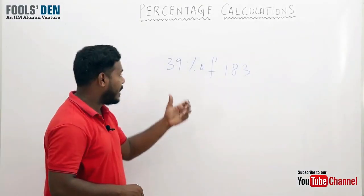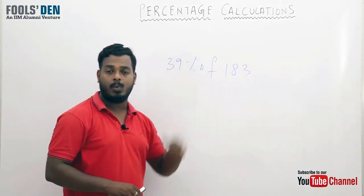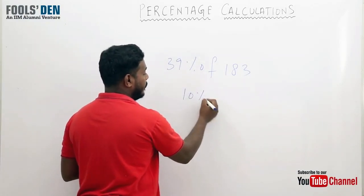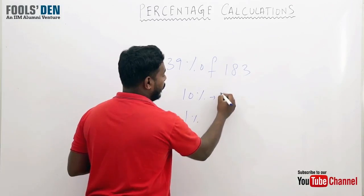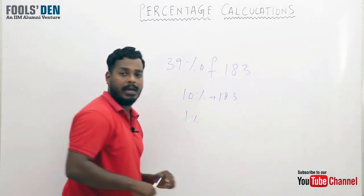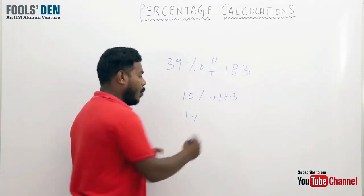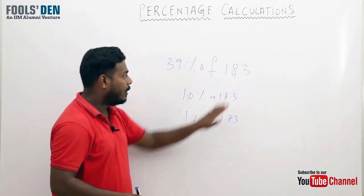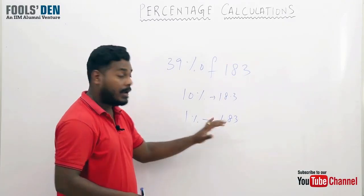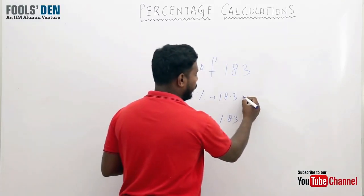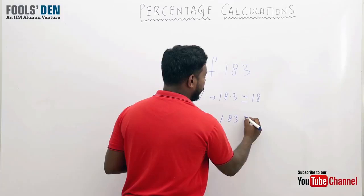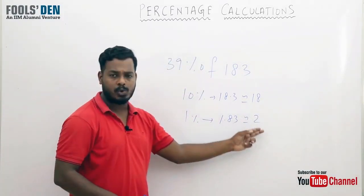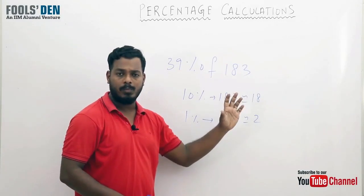Let's take one more example. Say I need to calculate 39 percent of 183, how to go about it? 183's 10 percent would be 18.3, and 1 percent would be 1.83. For saving time, we can round it off to 18, and this could be rounded off to 2, because 1.8 is close to 2 and 18.3 is close to 18.